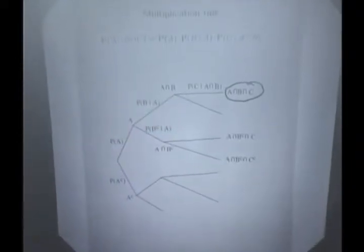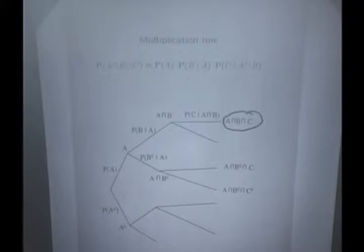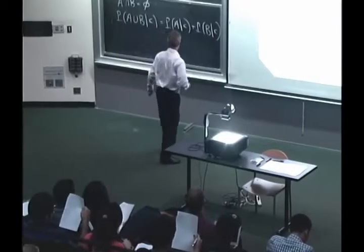So in terms of frequencies, how often do all three things happen: A, B, and C? You first see how often does A occur. Out of the times that A occurs, how often does B occur? And out of the times where both A and B have occurred, how often does C occur? And you can just multiply those three frequencies with each other.